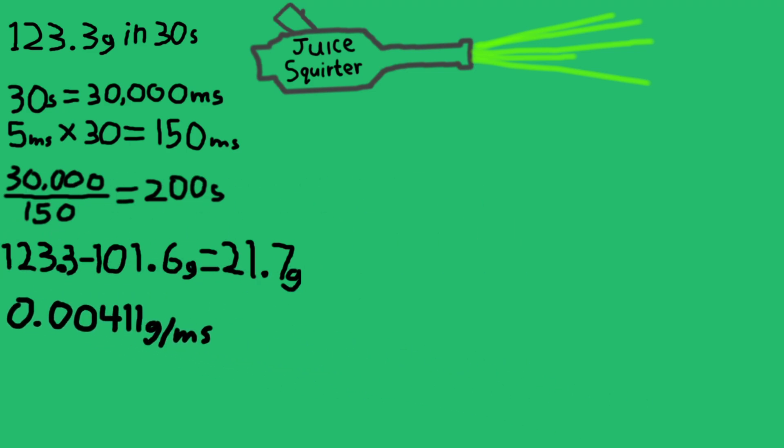in order to get our dead time, all we need to do is take the difference between our two measurements, 21.7 grams, and divide it by our flow rate, 0.00411. This gives us 5279.8, which is our dead time in milliseconds. You'll notice that this is a rather large number.